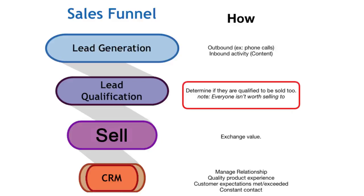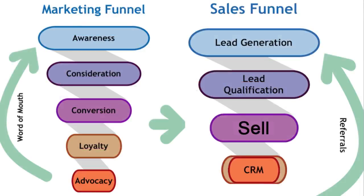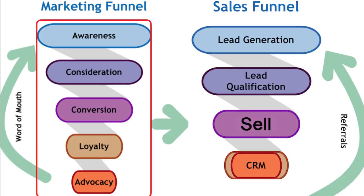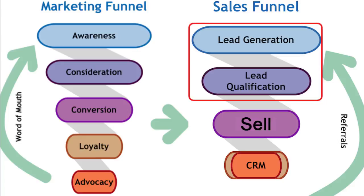Now let's compare the marketing and sales funnel, and then we'll get into what that looks like specifically for an artist. Looking at them side by side: in the marketing funnel you go through awareness, consideration, conversion, loyalty, and advocacy. Basically a fan discovers you, starts to like your music, listens to more music, gets into your brand, becomes loyal, and then tells more people — it's very much a content-based thing for a musician. They're discovering your music, discovering your brand, consuming it, and then spreading it.